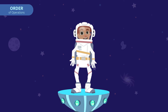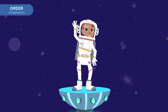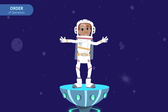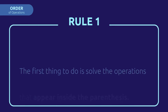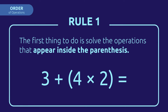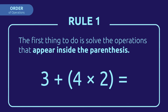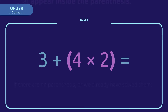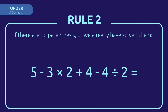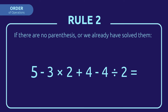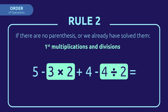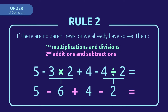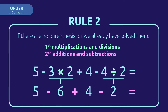In order to solve combined operations, we have to follow an order that we call the order of operations. There are two essential rules to keep in mind. Rule number one: the first thing to do is solve the operations that appear inside the parentheses. Rule number two: if there are no parentheses, or we have already solved them, then we will solve first the multiplications and divisions, followed by the additions and subtractions, in the order in that they appear.